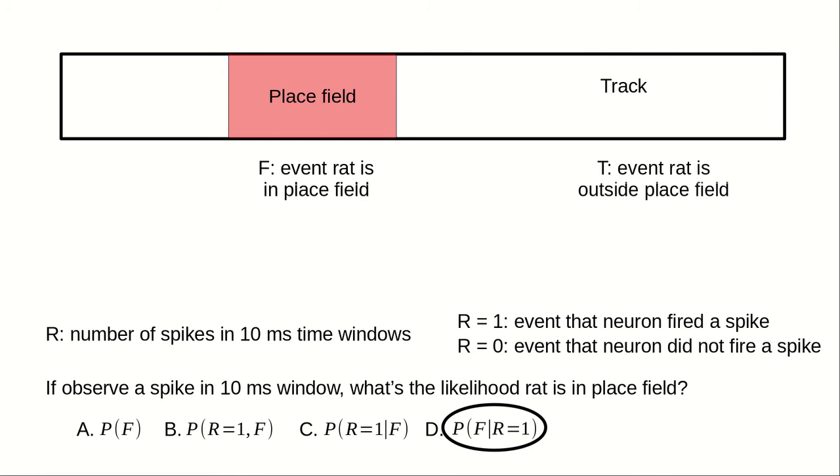Which probabilities do we have from our initial experiments? We observed that when the rat was in the place field, the probability that a spike occurred was 10%, i.e., P of R equals 1 given F equals 0.1. We also observed that the probability of a spike dropped to 1% when the rat was outside the place field, i.e., P of R equals 1 given T equals 0.01.